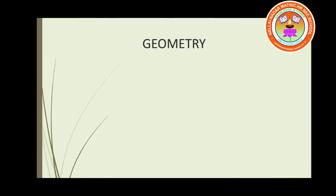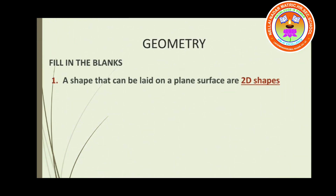Fill in the blanks. Your first fill-up: a shape that can be laid on a plain surface — these are 2D shapes. You have learned this as a definition. What are 2D shapes? A shape that can be laid on a plain surface is called a 2D shape.